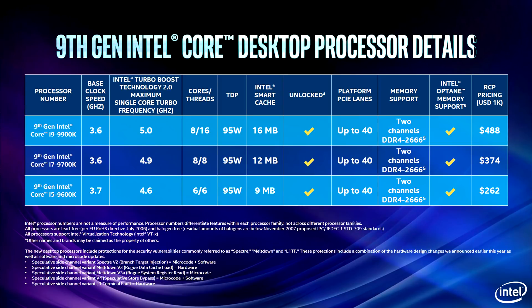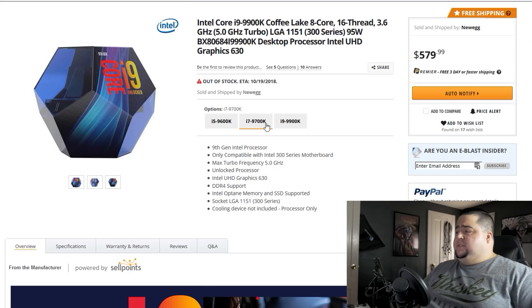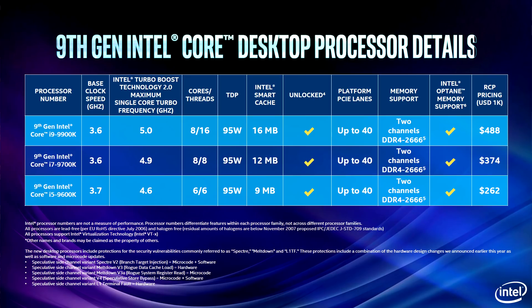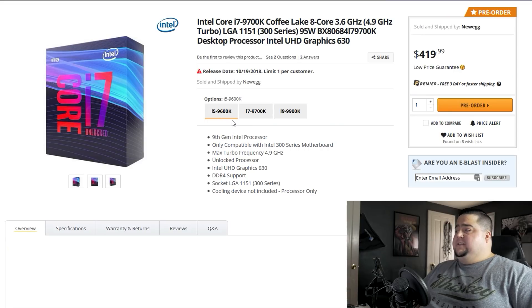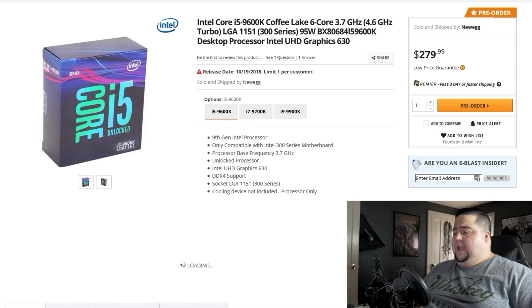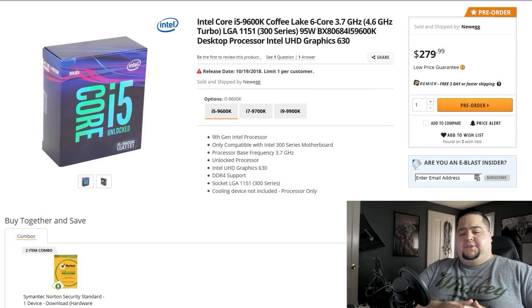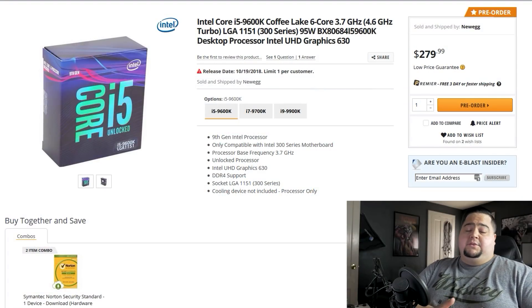Going back to the press slide, we can see the i9-9700K was listed at $374 and the i9-9600K is $262. And if we look on Newegg once again, we can see that the i9-9700K is actually selling for $420, which is more than $374, and the i9-9600K is actually listed at $280 — a little bit higher than what was in the press slide of $262. So either way, this pricing on this initial slide was, I feel, very misleading.